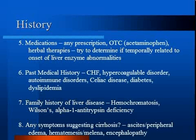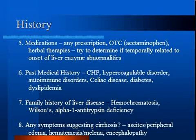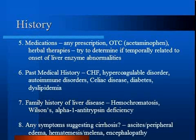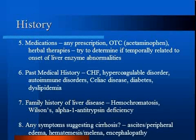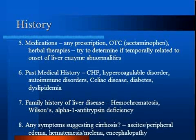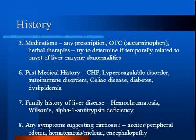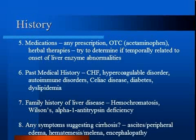The presence of other medical conditions may increase suspicions for certain diagnoses. CHF raises concern for hepatic congestion. Hypercoagulable disorder may suggest portal vein or hepatic vein thrombosis. Other autoimmune diseases or celiac disease may raise suspicions for autoimmune hepatitis. Diabetes and dyslipidemia are commonly seen in patients with fatty liver. Ask about a family history of liver conditions as well. Finally, you want to know if the patient has had any symptoms suggesting cirrhosis — ask about fluid accumulation in the abdomen or legs, symptoms suggesting upper GI bleeding, and episodes of confusion, disorientation, or disturbance in their sleep-wake cycle.